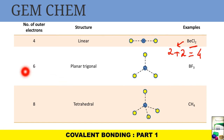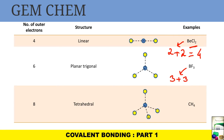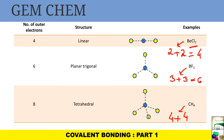If the number of outer electrons is six, the structure is planar trigonal. The example is BF3: boron has three electrons and three come from fluorine, making six. If the electron count is eight, the geometry is tetrahedral — example CH4 — where carbon has four valence electrons plus four from the hydrogens to make eight.